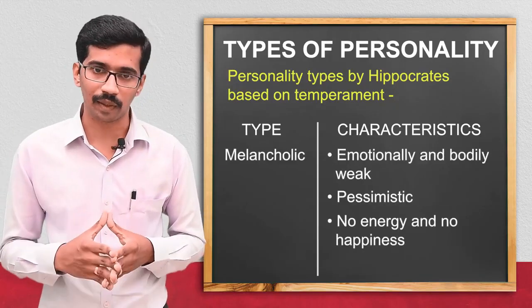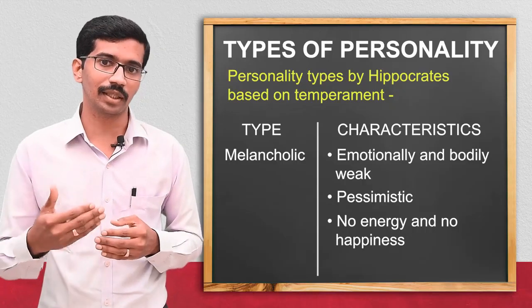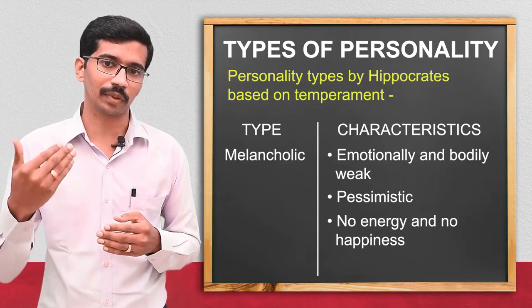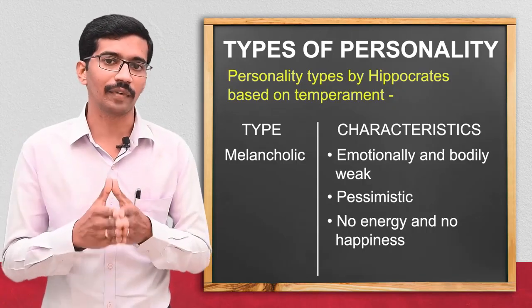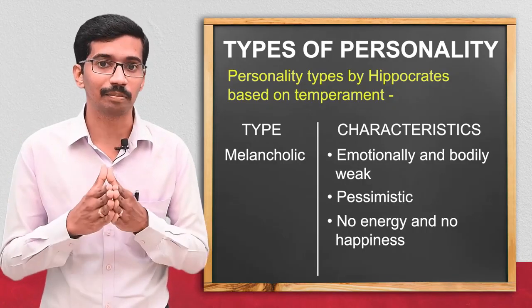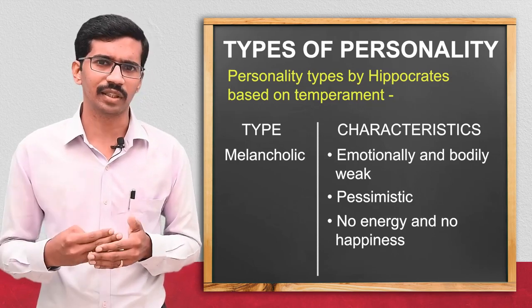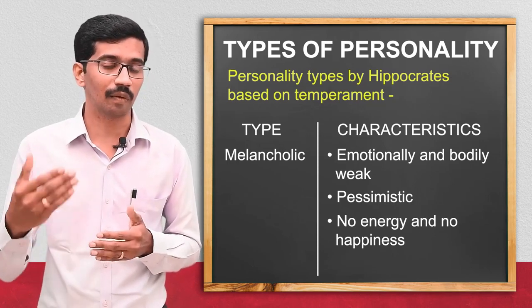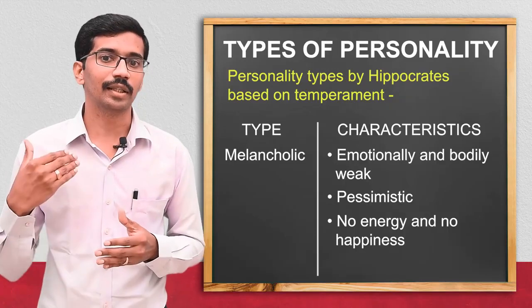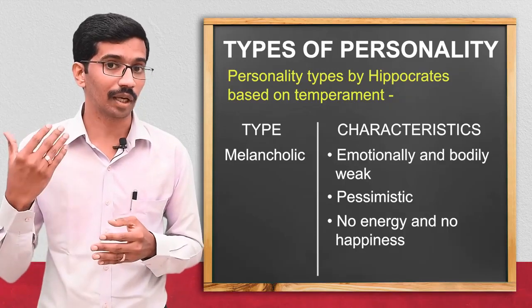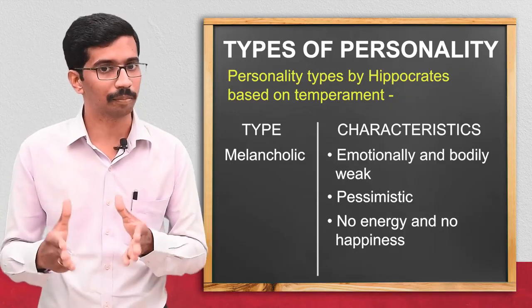Coming to the second type, the melancholic type: the person is both emotionally and bodily weak. He will always be having pessimism — meaning in any activity he sees only the negative side — and he may not have much energy or happiness.